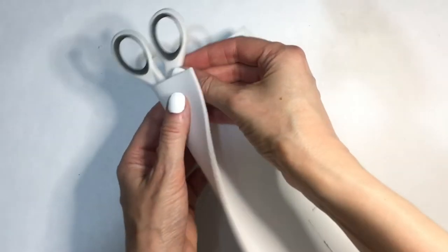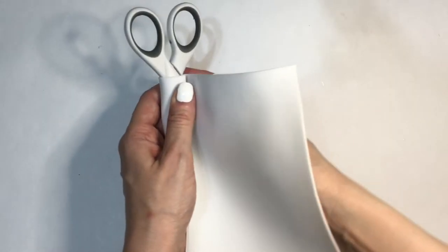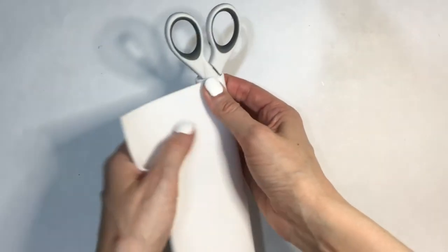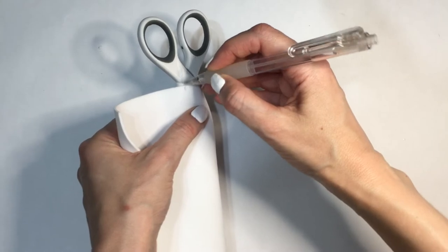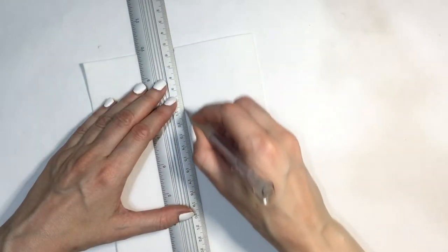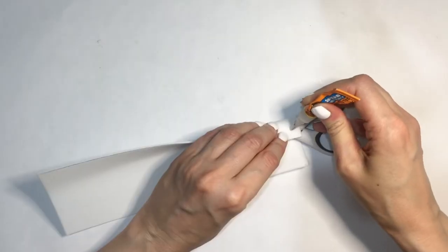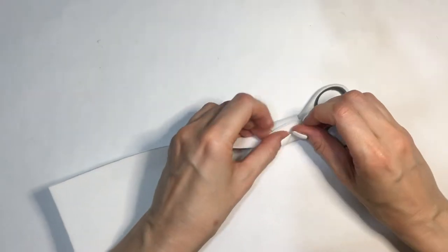First I'm going to be wrapping that foamy paper around just to figure out how much I need. Then I'm going to mark it, marking a line with my ruler and my pencil, and then just cutting that.